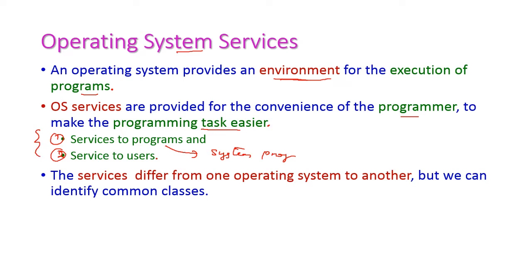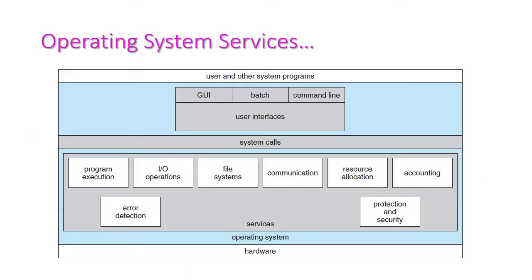These program services and user services differ from one operating system to another, but we can identify common classes. The operating system lies between the user program and the hardware. The first layer is the hardware layer, where all the physical devices are placed, including the CPU.